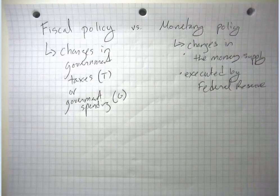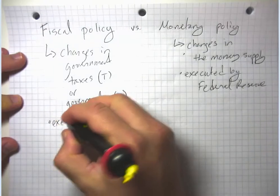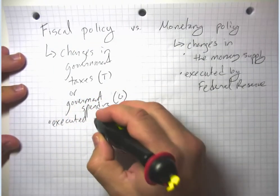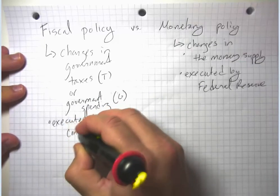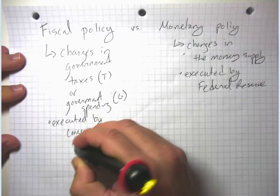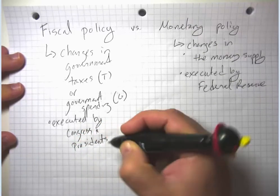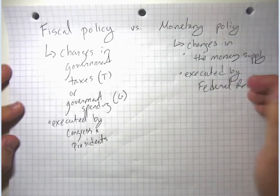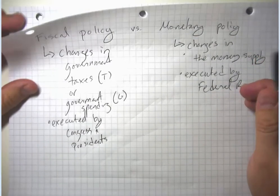These are executed through the government's tax and budgeting process, which is decided by Congress and the President at the national level, and state legislatures and governors at the state level. So how does fiscal policy work?